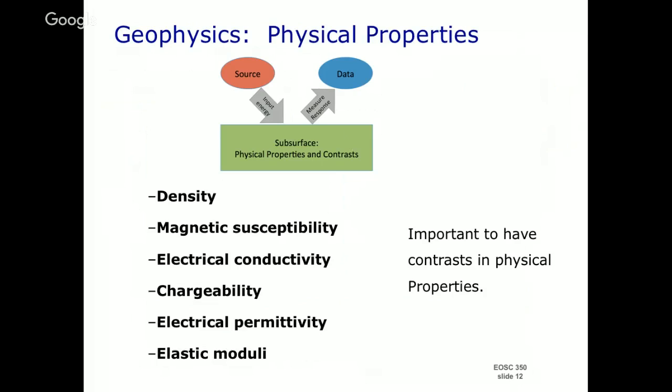These are different physical properties than geologists would use to describe rocks. You get a rock: you've got hardness, texture, color. That's a very valid way of describing something. But geophysicists have an entirely different suite of things. By combining the geologic description with the geophysical description, you can actually start to help understand your geological problem.